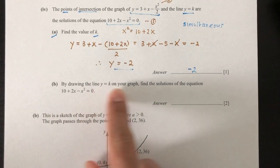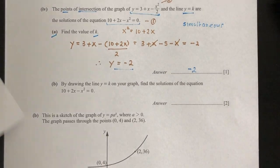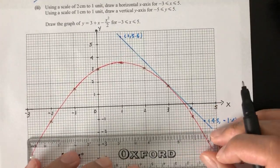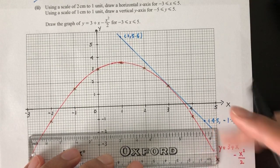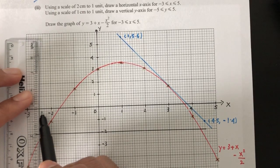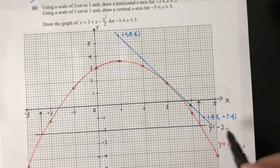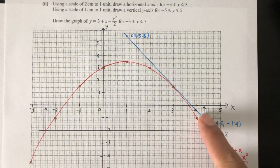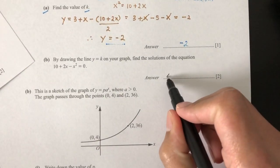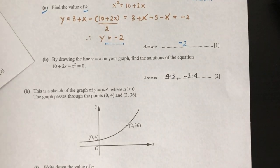By drawing the line y equals minus 2 on the graph, find the solutions of the equation. We draw this horizontal line and check where it cuts your graph. Always label the line as y equals minus 2. The corresponding x values are approximately 4.3 and minus 2.4. Your graph may give slightly different values, and that's okay, as long as you show your work.